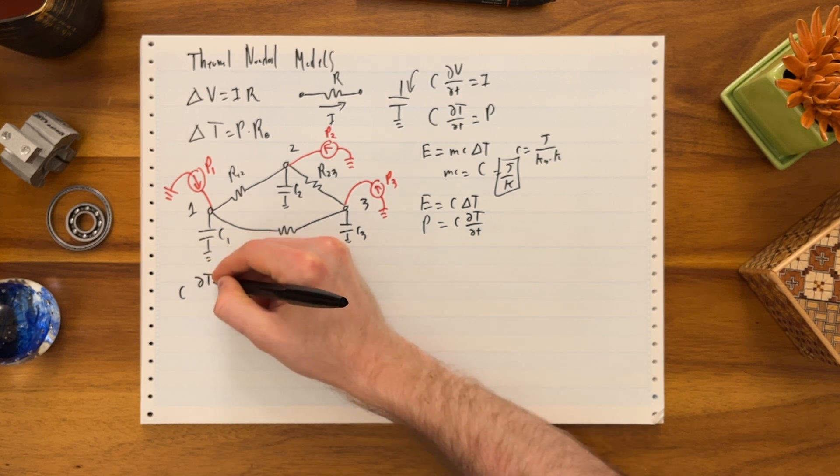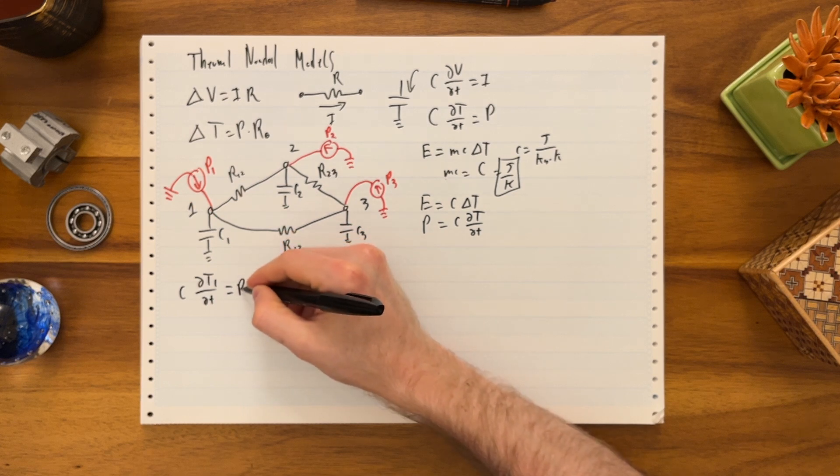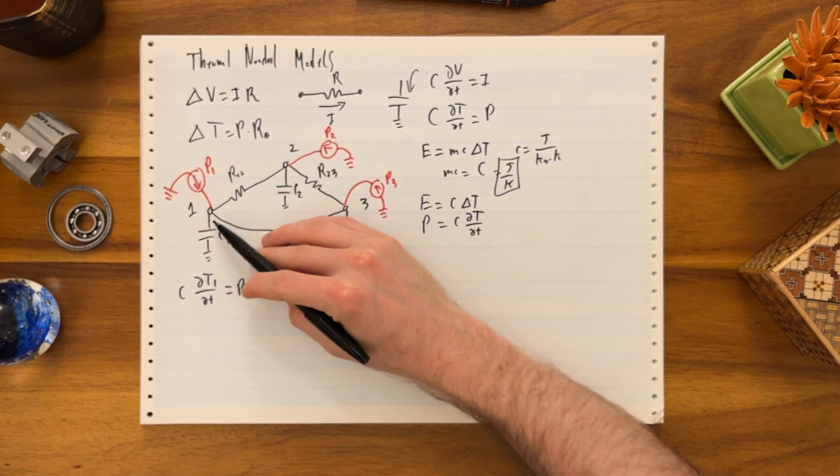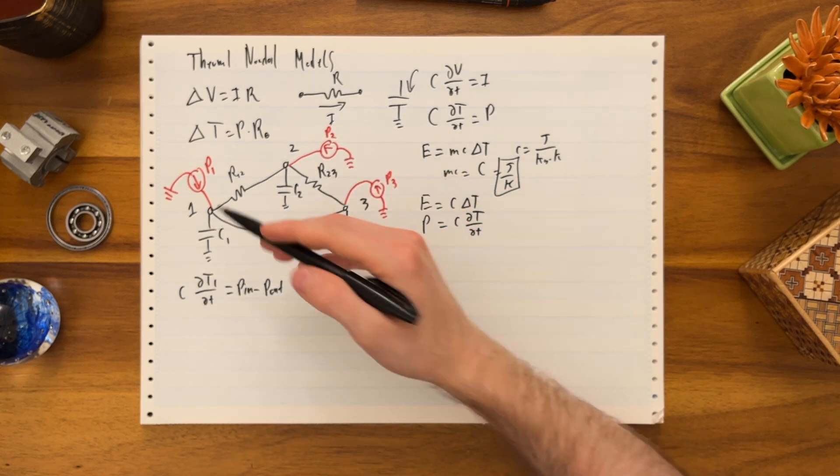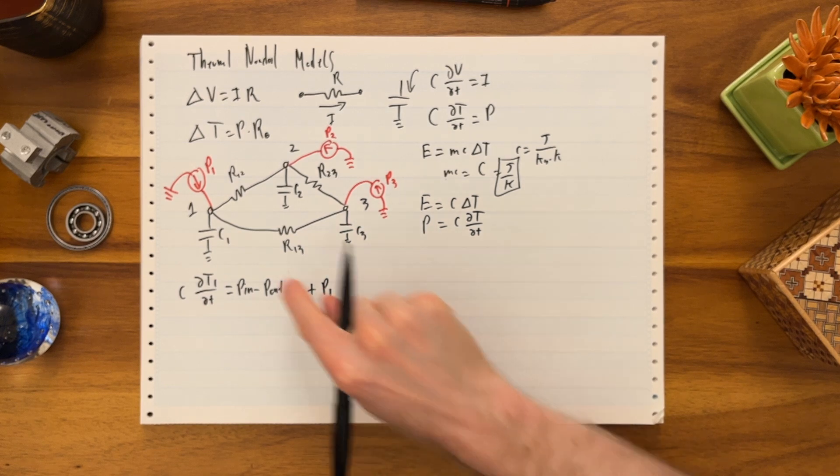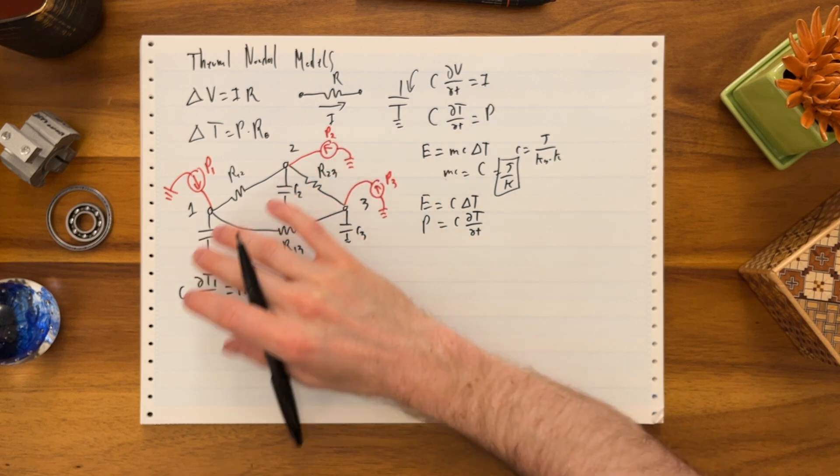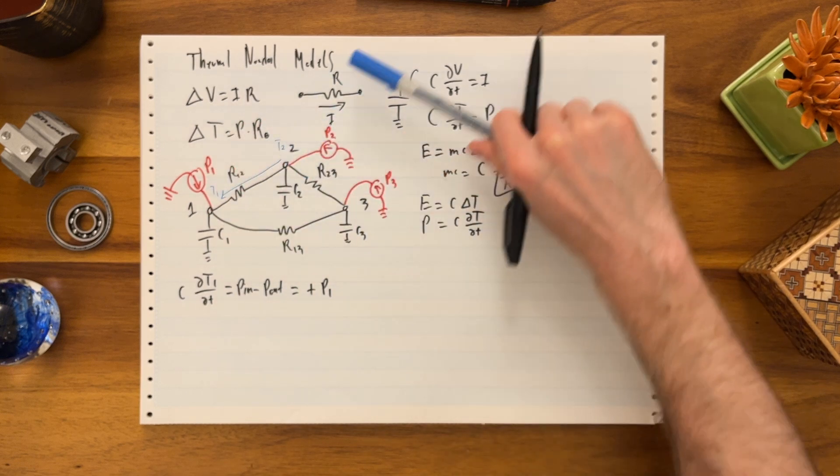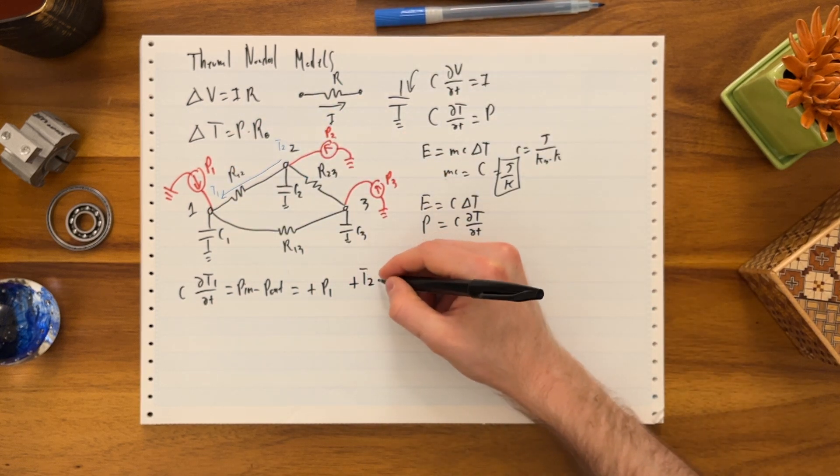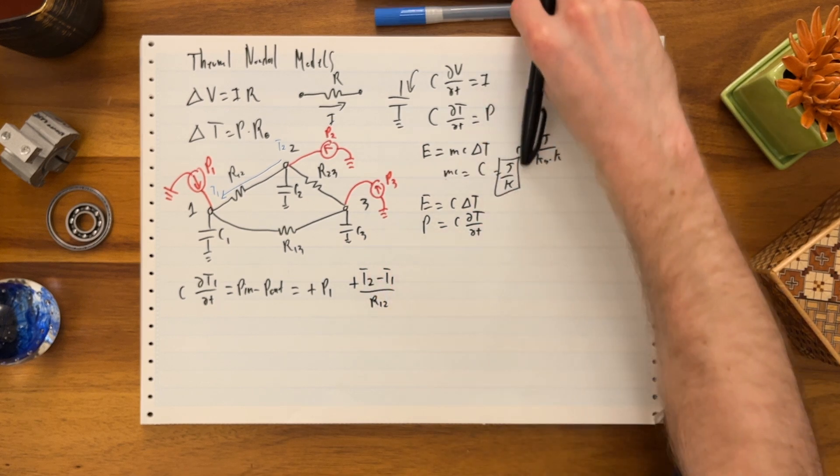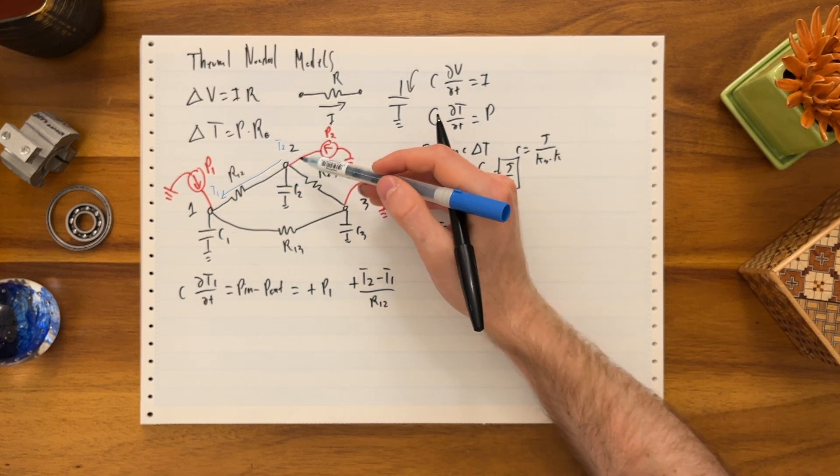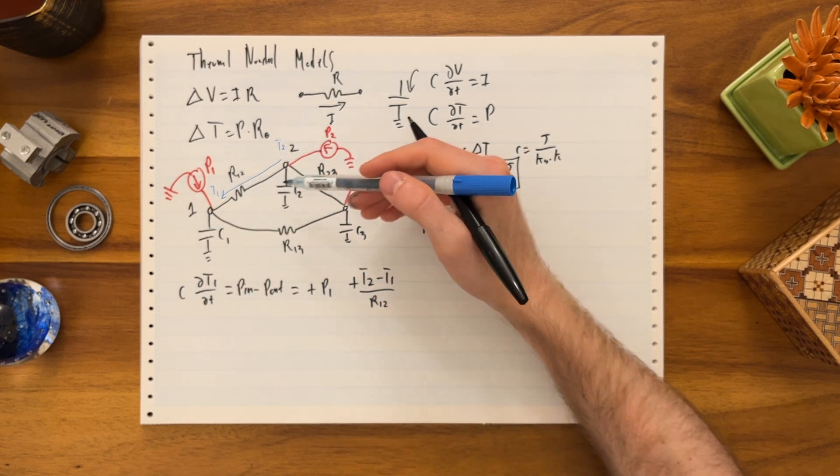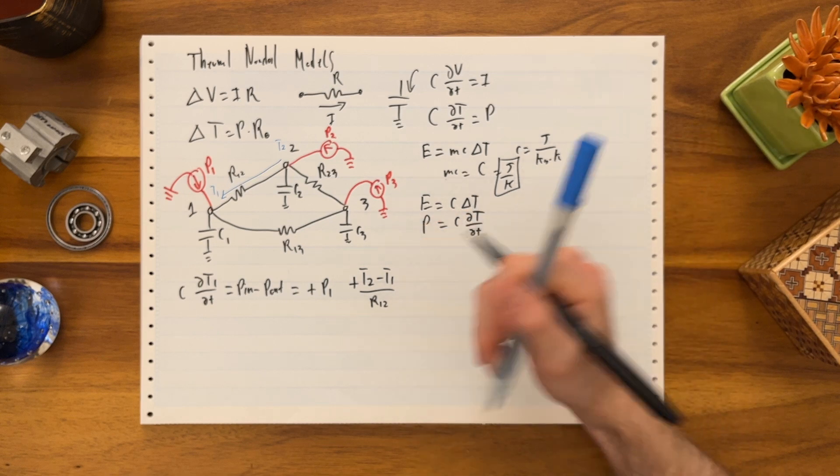We say big C DT1 D time equals power in minus power out. What is the power in? What is the power out? I know that P1 is showing up in node 1. It might end up trickling out somewhere else later, but it's got to show up here first. So I'm going to say plus P1. But I also know that I'm connected to node 2. Let's say that node 2 is hotter than node 1. What would the power flow be? We'd have T2 over here, and there'd be a flow of power this way into T1. And that would equal plus T2 minus T1 over R12. This is the delta between these two nodes drives power from one node to the other. So if T2 was hotter than T1, the power is positive, and therefore the temperature would rise. Eventually, T1 would meet T2, this delta goes to zero, they are now in equilibrium, no more power flows.